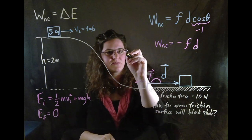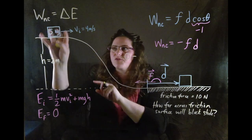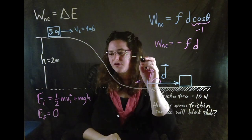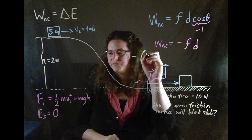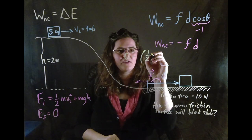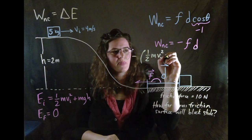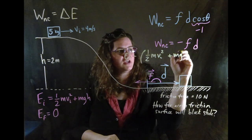All right, so zero minus, I'm rewriting this equation here, the initial energy, one half m v i squared plus m g h.